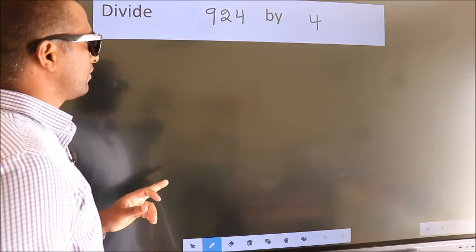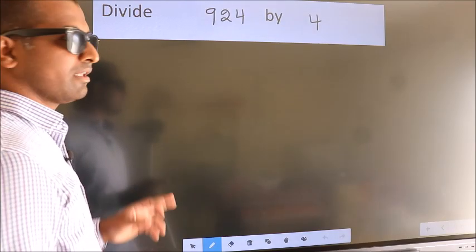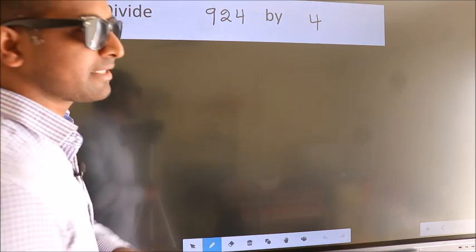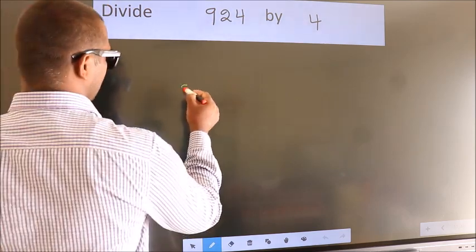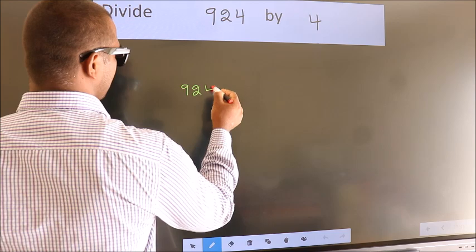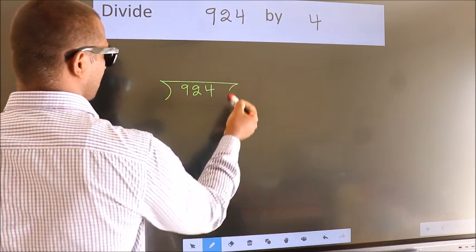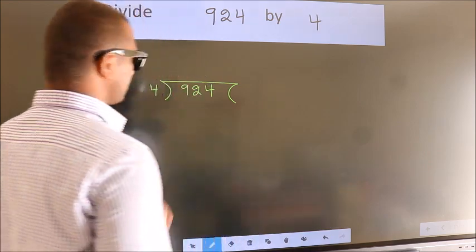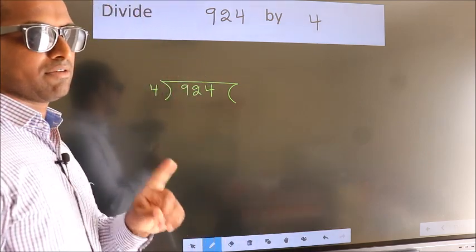Divide 924 by 4. To do this division, we should frame it in this way. 924 here, 4 here. This is your step 1.